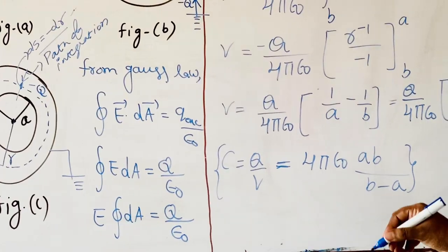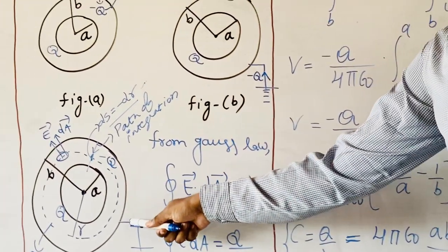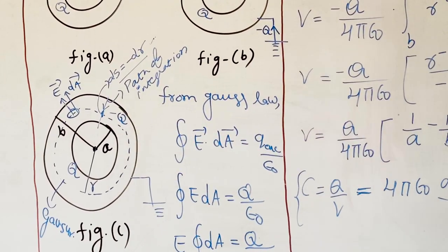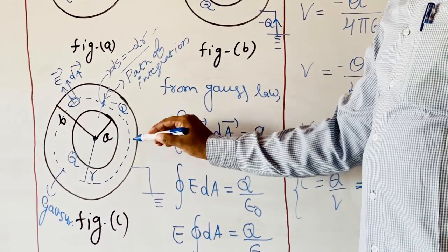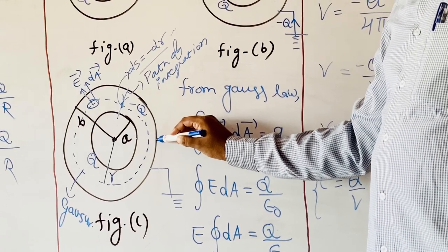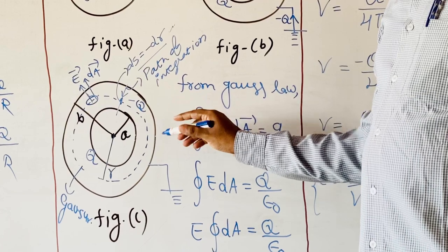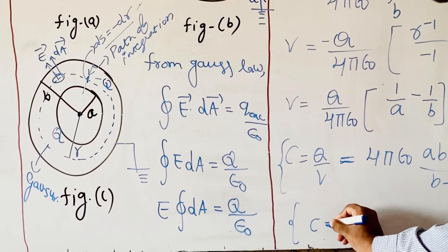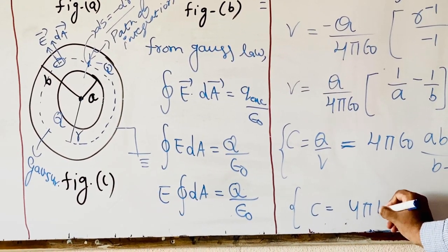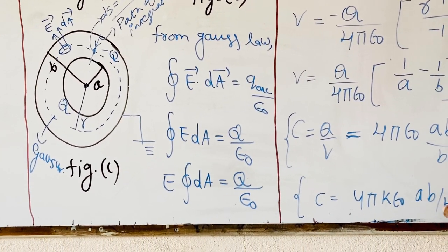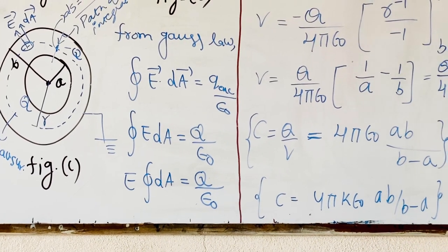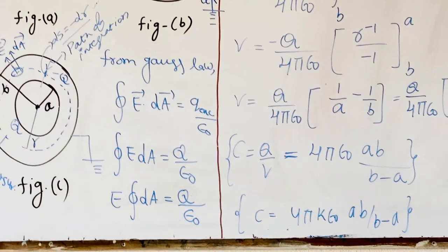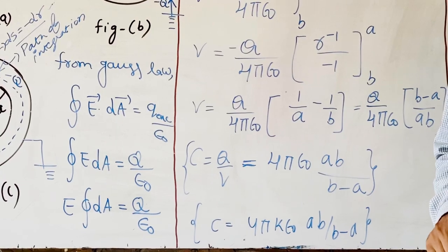Suppose the medium between these two plates is filled with some dielectric constant K. At that time, C = 4πKε₀ × (ab)/(b − a). So this is the capacitance of the spherical plate capacitor when the outer sphere is earthed and the inner sphere is charged. Now we can see one more topic.